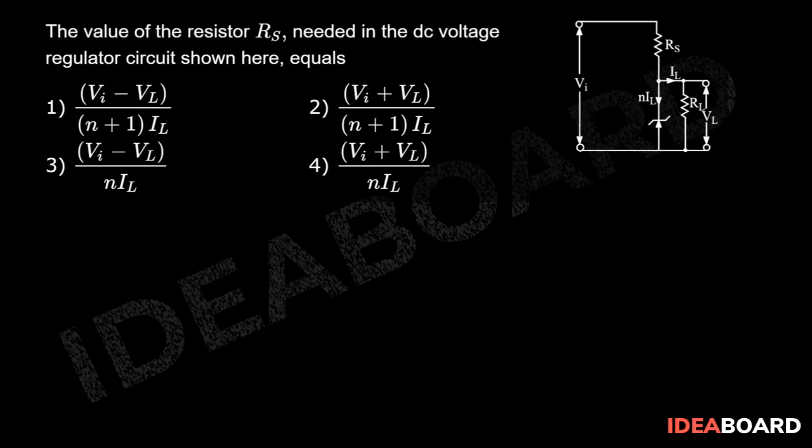we can write that the total current flowing through RS will be equal to IL plus N times IL. N times IL current flows through this diode and IL current flows through this load resistor.